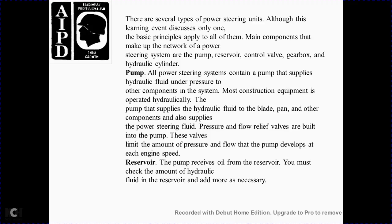There are several types of power steering systems, although this lesson discusses only the basic principles that apply to them all. The main components making up the power steering system are the pump, the control valve or gearbox, and the hydraulic cylinder. All power steering pumps contain a pump to supply hydraulic fluid and build up pressure within the system. Most construction equipment is operated with a hydraulic load pump supplying hydraulic fluid to the blade pan or other components, which also supplies power steering fluid.